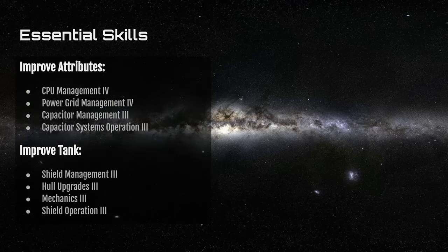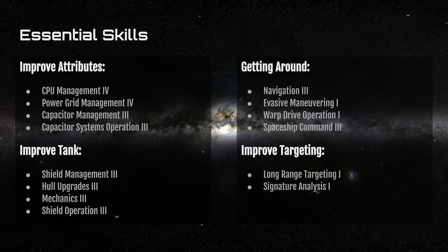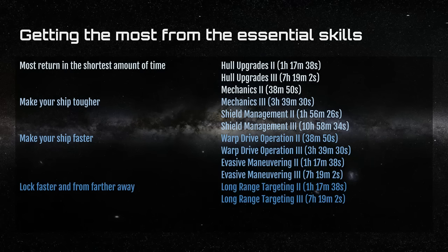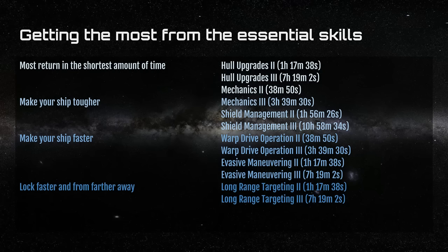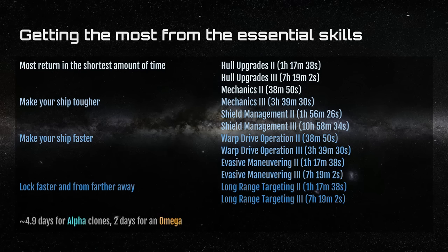Essential skills cover improving your attributes, improving your ship's tank, helping you get around faster, and improving targeting. These are the skills you should focus on training right away, and this list is focused on Alpha Clones. To make the most of essential skills, build a training queue starting with Hull Upgrades and Mechanics to improve survivability and repair, then add Shield Management for damage absorption, leading into Warp Drive Operation and Evasive Maneuvering for speed. Then, to lock farther and faster, pick up Long Range Targeting levels 2 and 3. This is about a 4-to-5-day train for Alpha Clones and about 2 days for an Omega Clone.